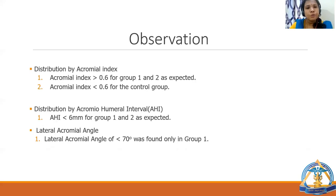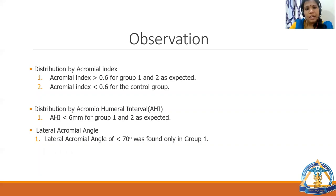According to distribution by acromial index, Group 1 and Group 2 had higher acromial index, greater than 0.6, while the control group had a low acromial index, less than 0.6. Group 1 and Group 2 had acromial humeral interval less than 6 mm, and a lateral acromial angle of less than 70 degrees was found only in Group 1, that is, rotator cuff pathology, especially supraspinatus tear.